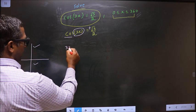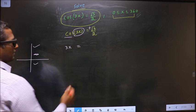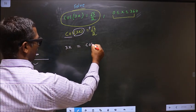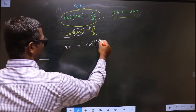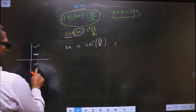So now 3x equal to, to get an angle in the first, we do directly cos inverse root 3 by 2. To get an angle in the fourth,